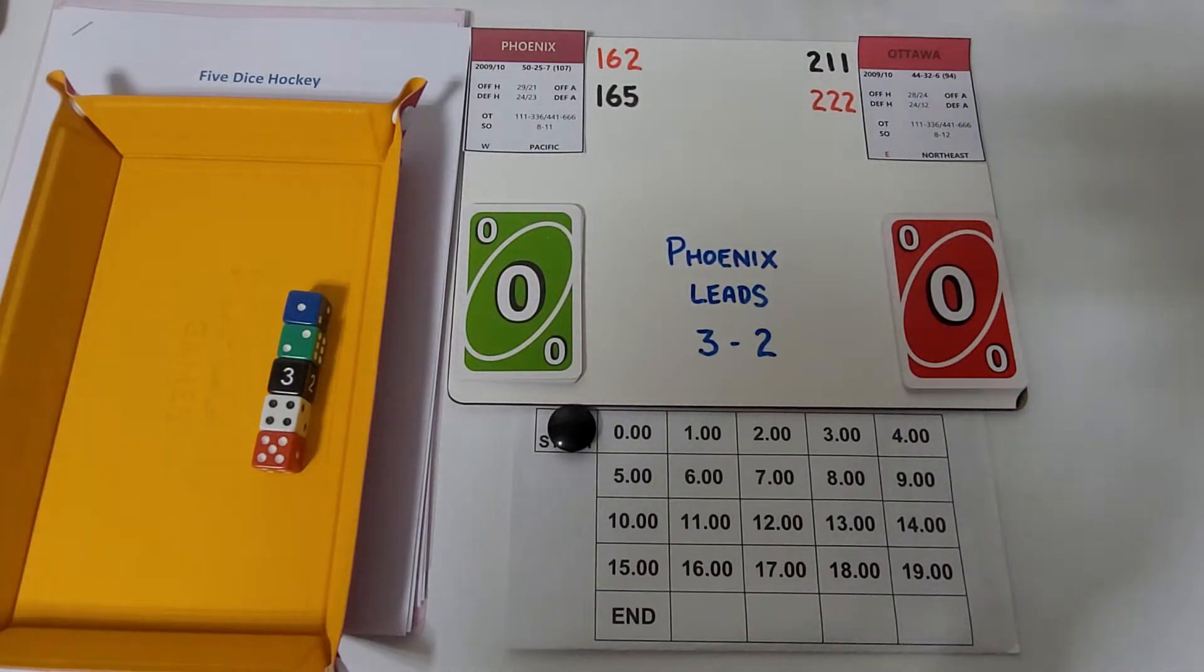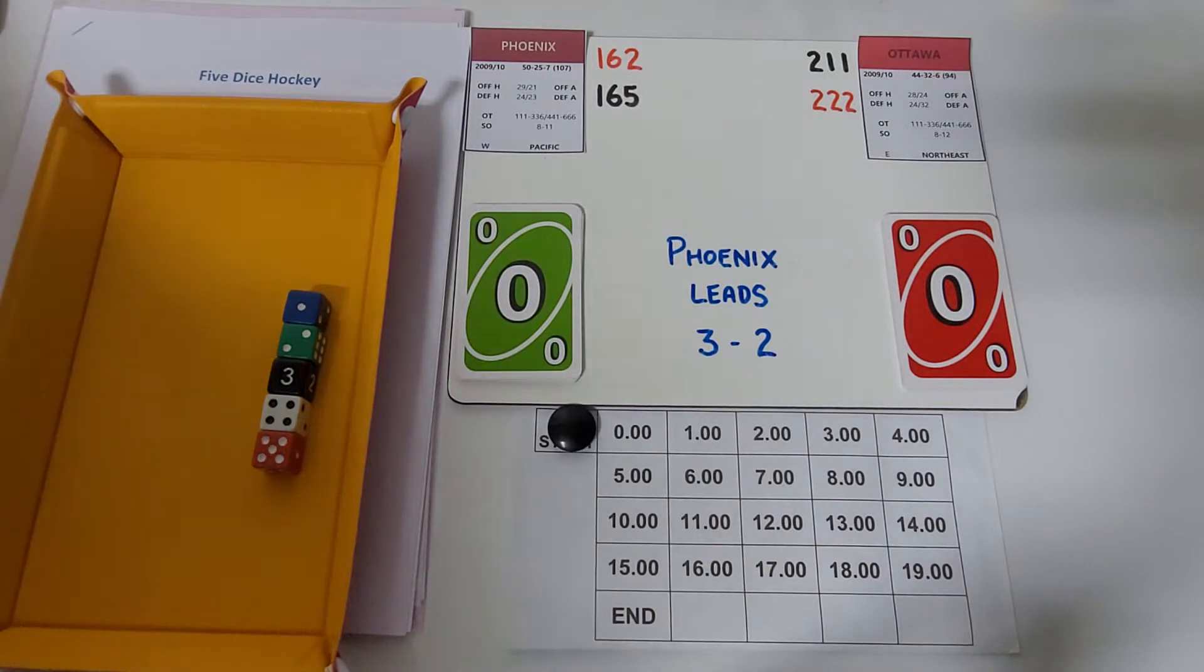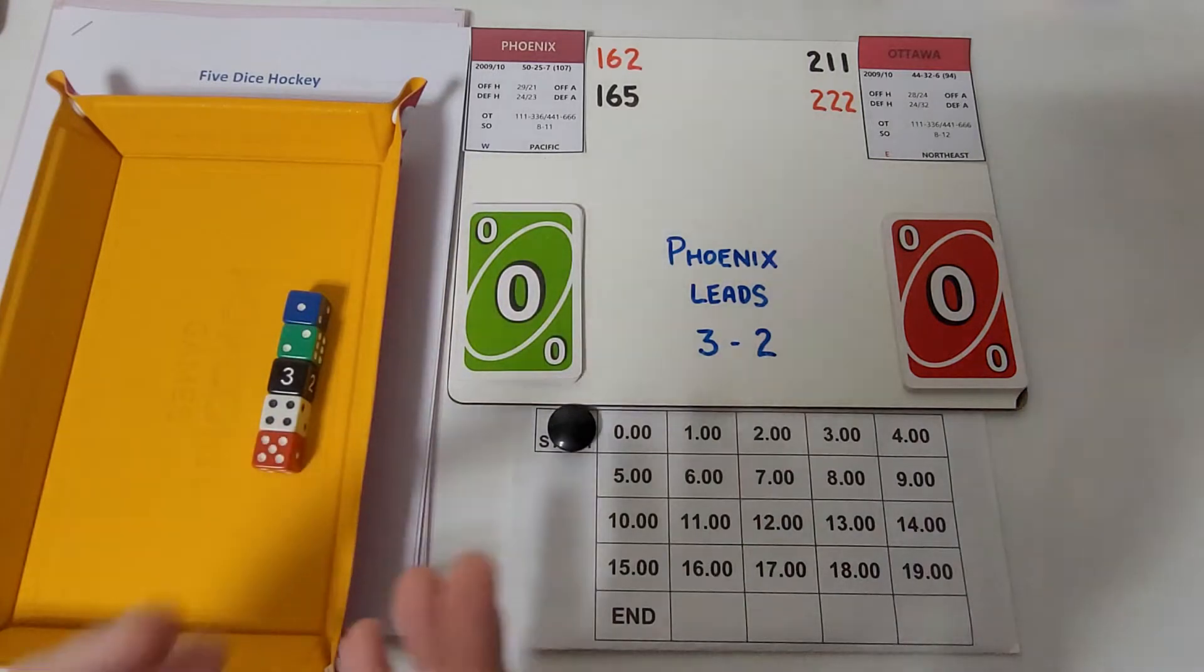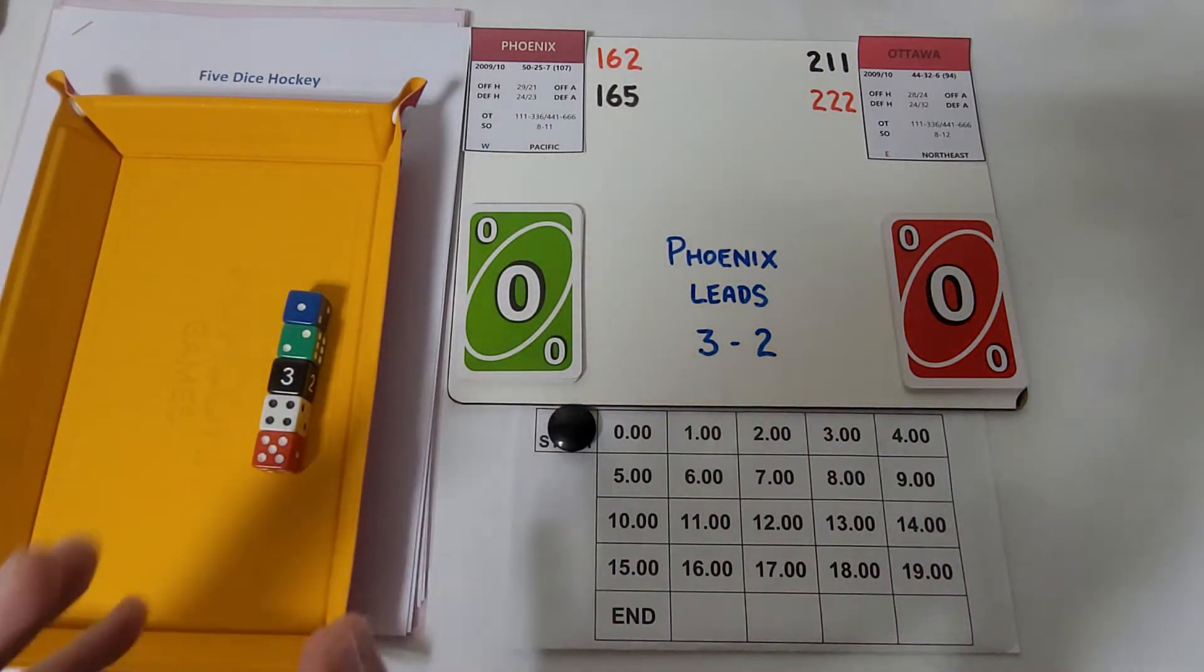Chris Kelly also had six points, a goal and five assists. You have Mike Fisher with five points. Chris Neal had three goals in six games. Jarkko Ruutu played for this team, along with Chris Campoli, Anton Volchenkov, and Jonathan Cheechoo. Milan Michalek also played for Ottawa in this series.